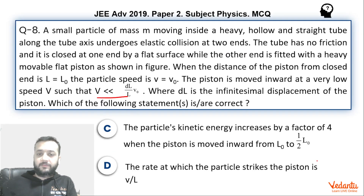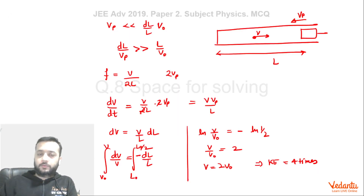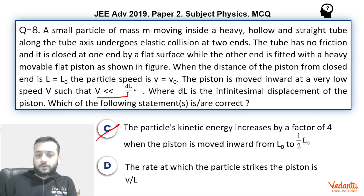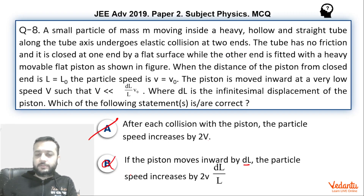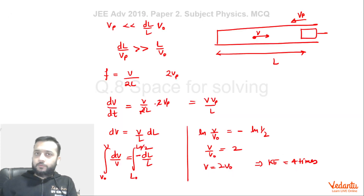So Option C is correct — the kinetic energy becomes four times when the distance becomes half. The rate at which the particle strikes the piston is the frequency of collision, which is v/(2l). Option D is wrong. Therefore the correct options are A and C. I hope you understood the solution — that's it, thank you.